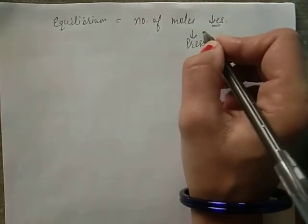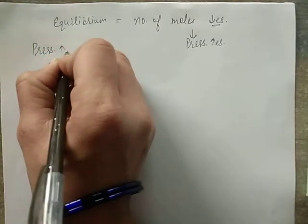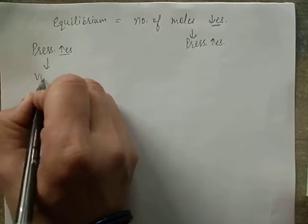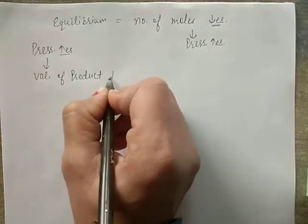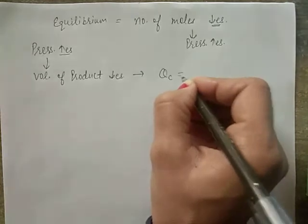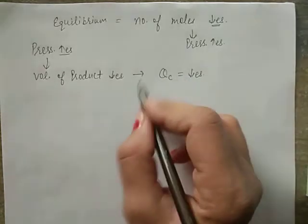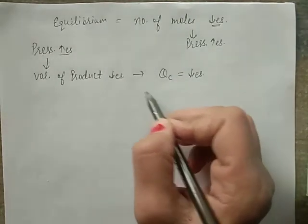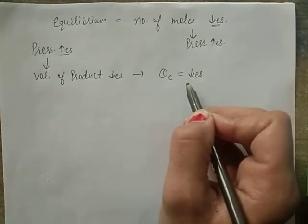As you increase pressure, the volume of the system decreases, Qc decreases, and to re-achieve equilibrium, the reaction always moves in the forward direction.